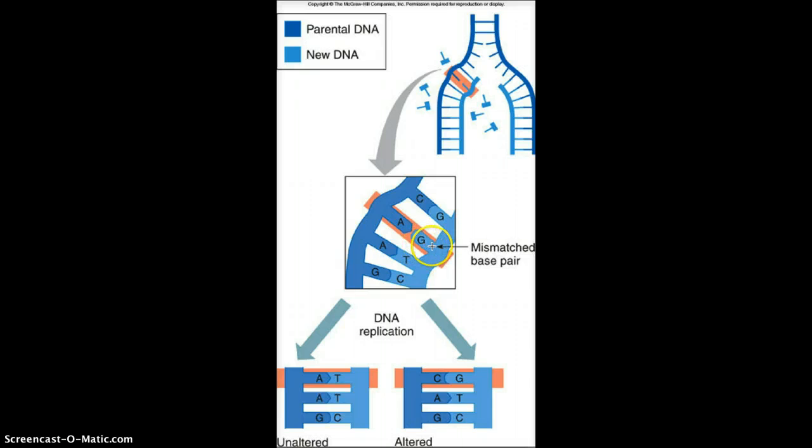This over here, this mistake or mutation, we can call it, is going to get passed on. So now when the strands separate, and we look at this strand over here, when DNA polymerase goes along and adds the complementary nucleotide, now it's going to see a G, and it's going to add the complementary nucleotide C.